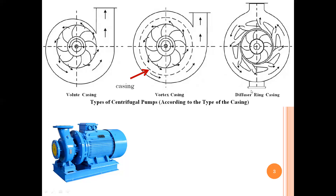Coming to the third type: casing with guide blade angles, also called diffuser ring casing. As water comes out of the central portion of the impeller, it passes through guide vanes which guide the water to flow upward in a regular pattern. Since it guides the flow after the impeller, it has a better efficiency. It has two names: diffuser ring casing, and casing with guide vanes. So the three types of casing are: volute casing, vortex casing, and diffuser ring casing.